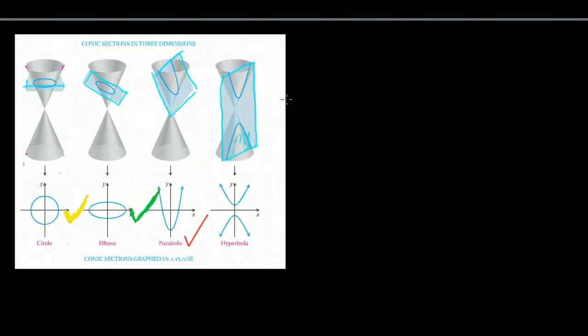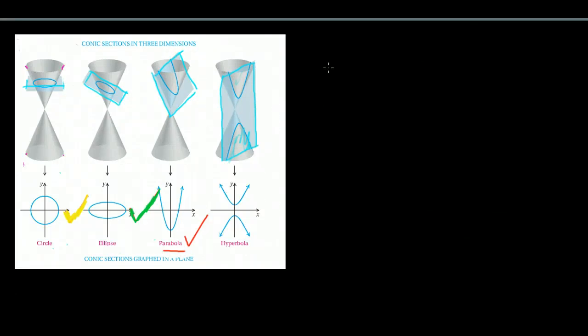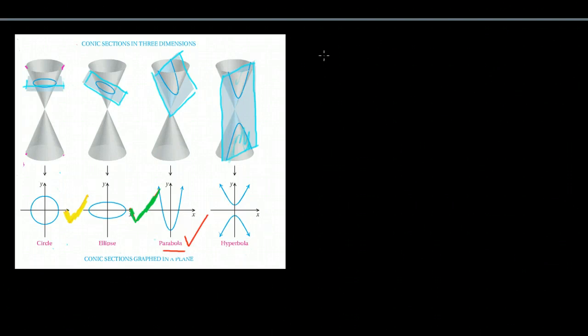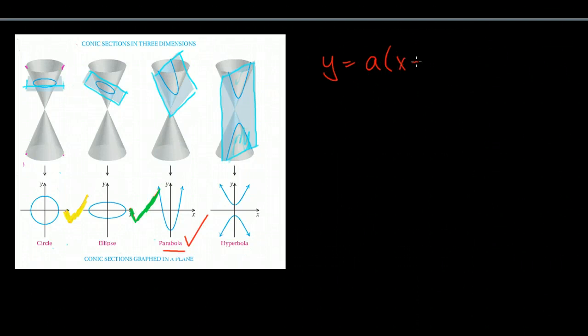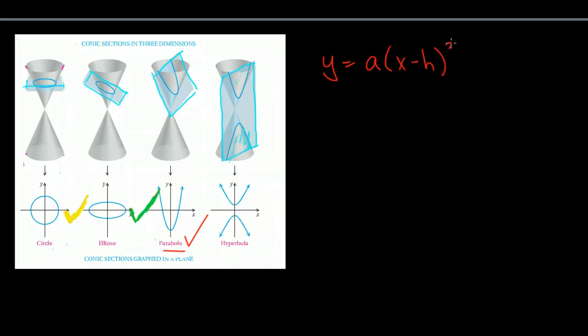So far in our exploration of conic sections, we've taken a look at parabolas. Let's see what the graphing form of a parabola looks like. It is y equals some scalar times x minus h quantity squared plus k.